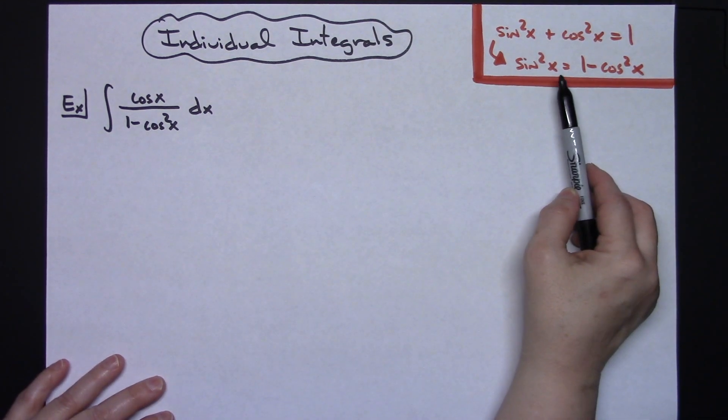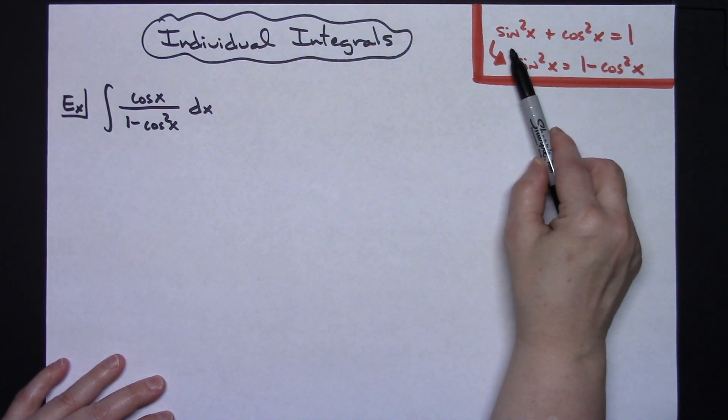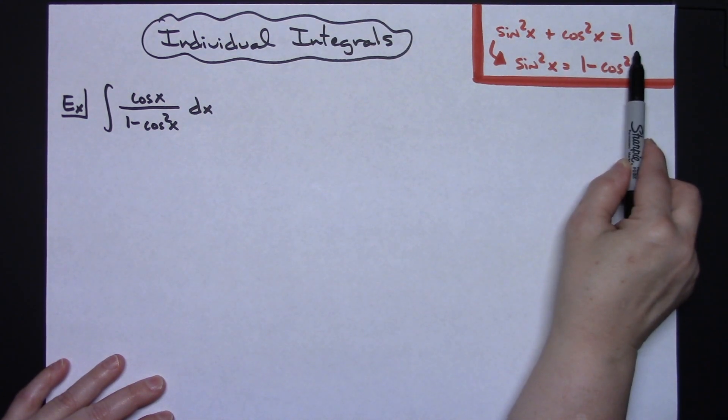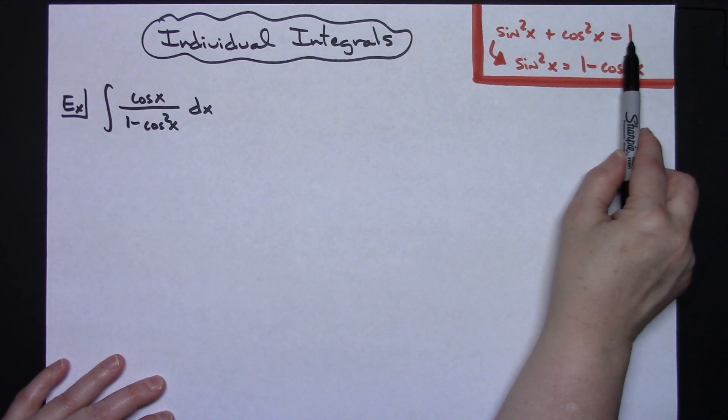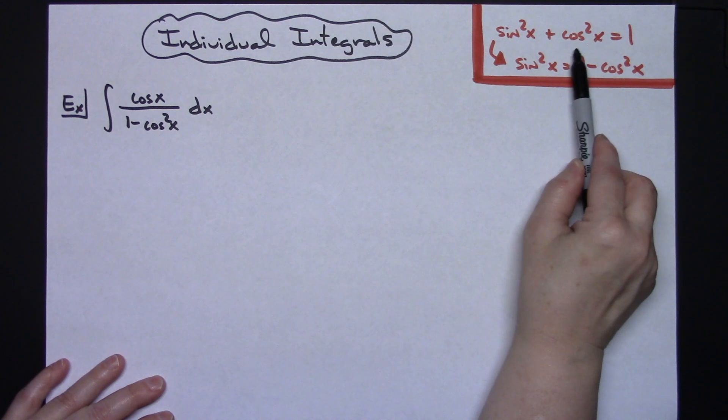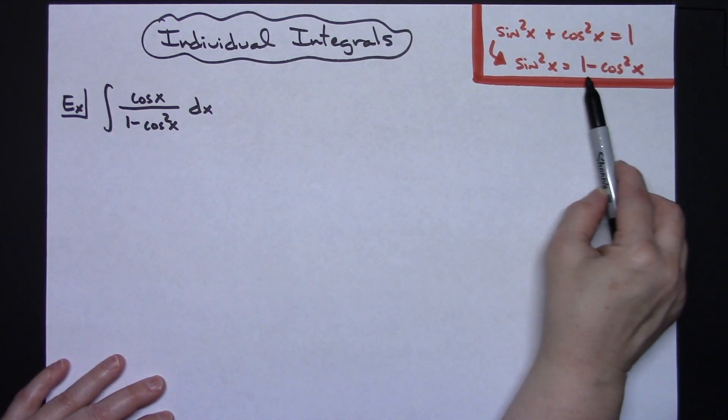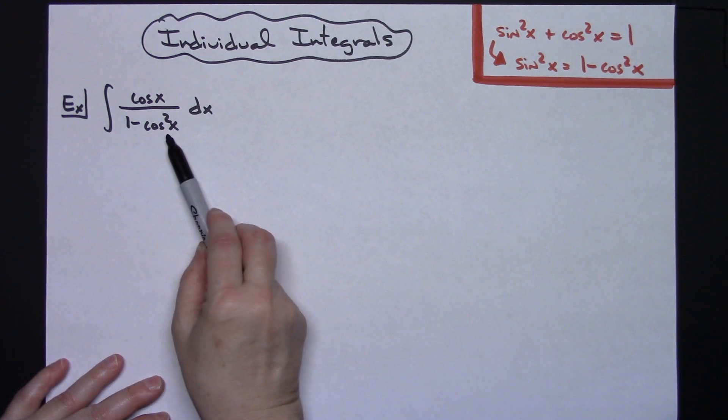In this integral I am going to use this Pythagorean triplet sine squared x plus cosine squared x equals 1. We can take this and manipulate it any way we want. So in other words I could solve for sine squared x by subtracting that cosine squared x from both sides and I would get that 1 minus cosine x squared which is what we see right here.